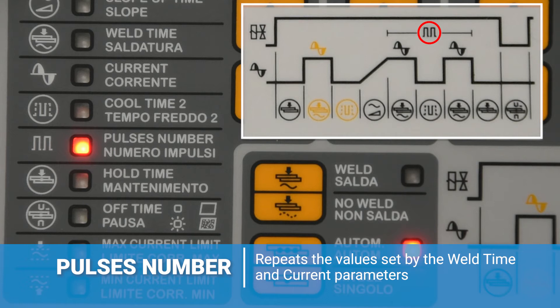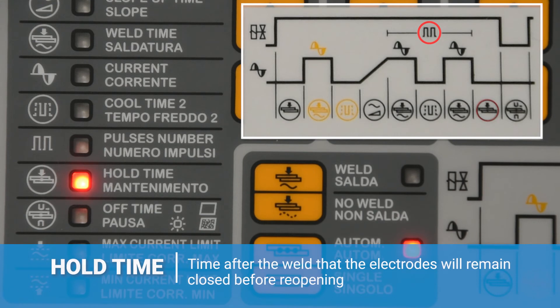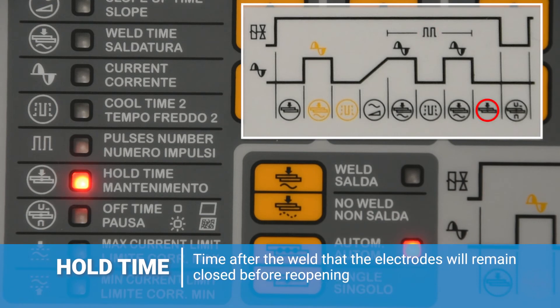A pulse will repeat the value set by the weld time and weld current parameters. Next, we have hold time. The hold time can be set between 0 and 99 cycles. This is the amount of time that the electrodes will remain closed after welding before reopening, and may allow the molten material a chance to solidify.